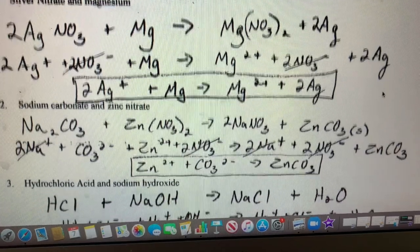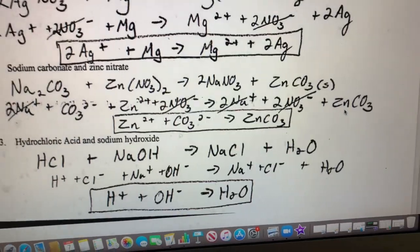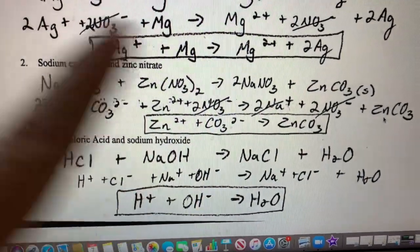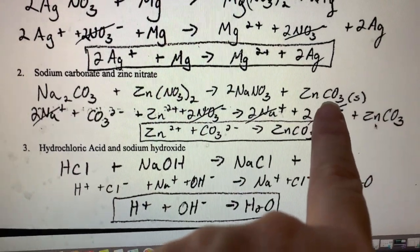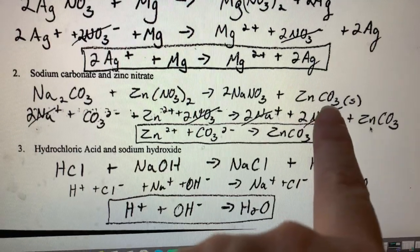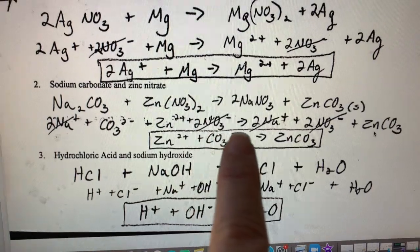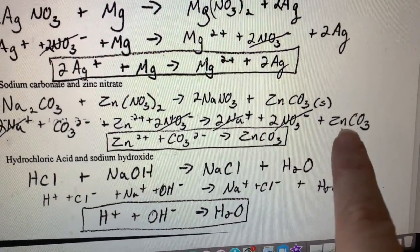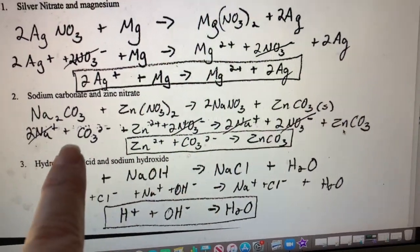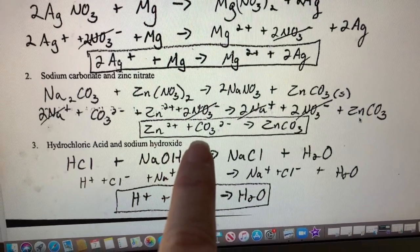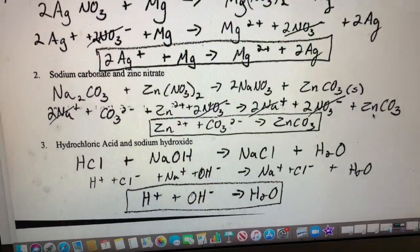As we continue on, I have a double replacement reaction here. This is a precipitate reaction which means we formed an insoluble compound, zinc carbonate, which stays whole. So when I do my ions, zinc carbonate does not turn into ions because it is insoluble. It stays as a solid. The only things that changed here were the zinc ion and the carbonate ion because they turned into a solid. Your sodium and your nitrate are your spectators.